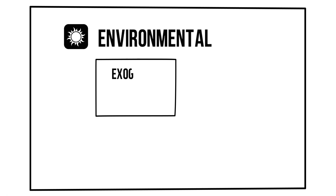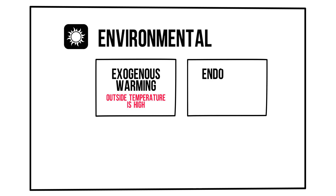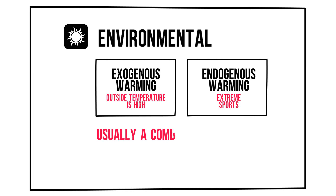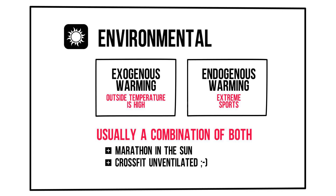Environmental hyperthermia can be split into exogenous warming, like in heat stroke when outside temperature is high, and endogenous warming, caused by extreme sports with inadequate cooling. Usually it's a combination of both — for instance, running a marathon on a hot sunny day, or doing CrossFit in a gym with inadequate ventilation. Another important cause of endogenous warming is epilepsy.